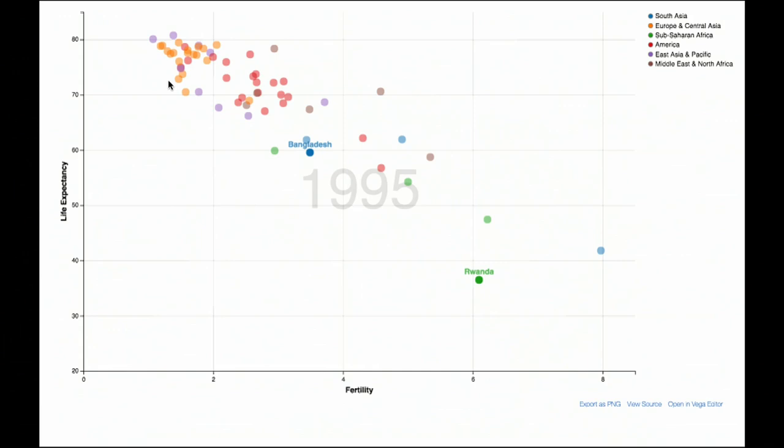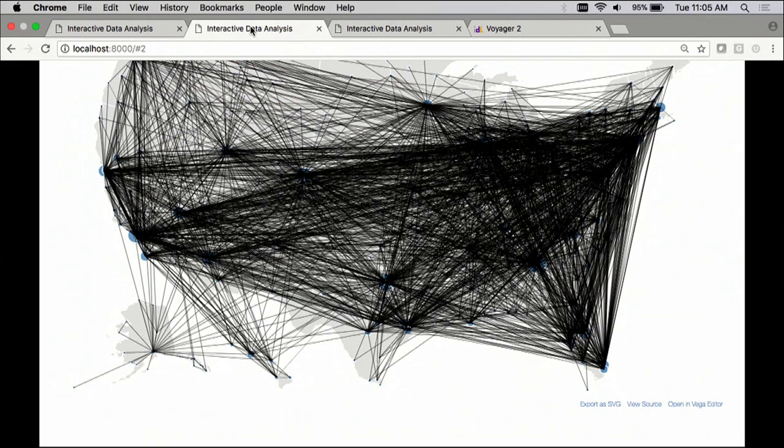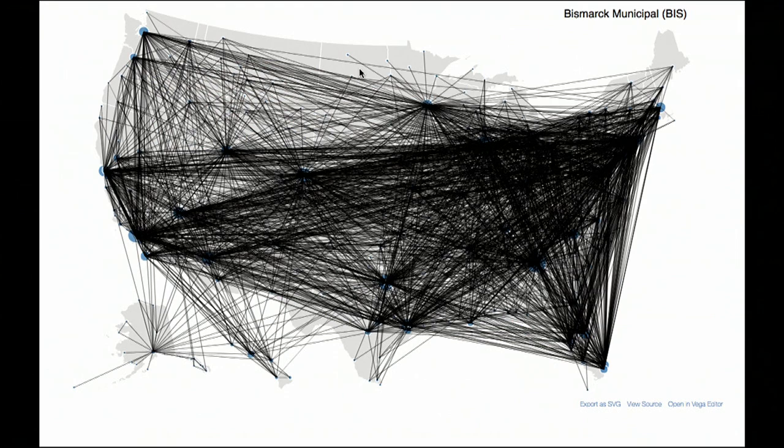So in this way, we're using both visual encodings and interaction techniques as ways to gain more understanding into a data set. Here we've done that for some statistical data. Let's look at another example combining both networks and cartography. Here's a map of the different direct flight routes in the United States.